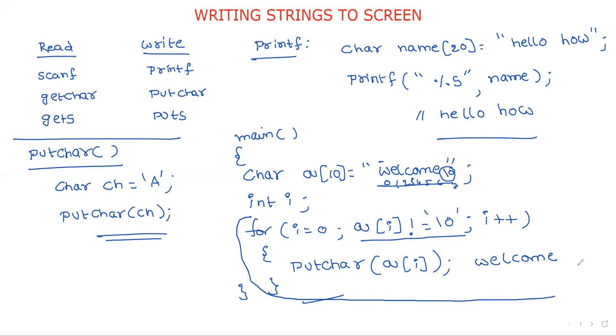This is putchar. By using this loop we are printing character by character. So printf is completed, putchar is completed. What is puts? Simply, for example, if this is your string, instead of writing this, you can write puts(name). The main difference between printf and puts is in printf statement we are writing the control string. If you require some message, you can write it. But in puts, instead of using any control string, simply we are passing the name of the string. puts(name) directly gives the answer "hello how".